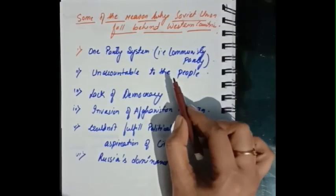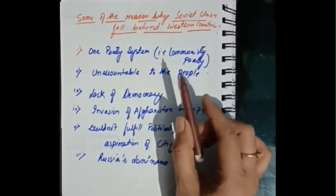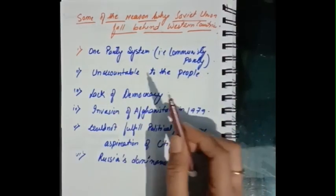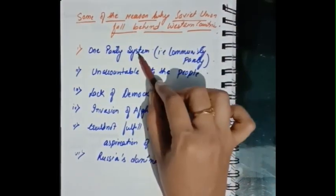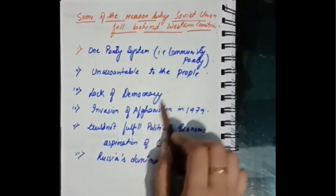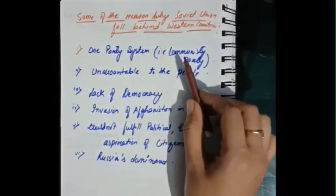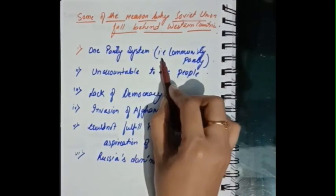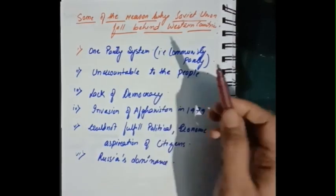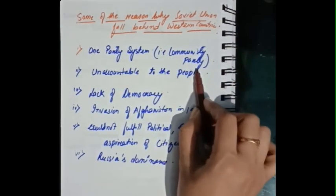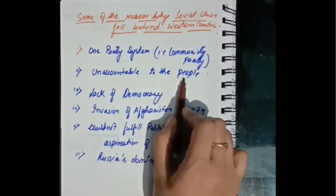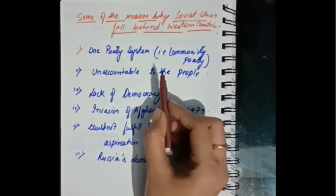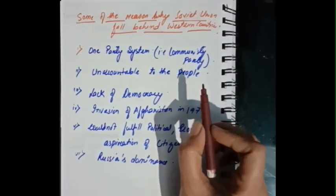Though the USSR had a well-developed economy and high-class infrastructure, there were some reasons why it fell behind Western countries. First, most institutions of the Soviet Union were under the one-party system — the Communist Party — which had tight control over all institutions and was unaccountable to the people. The government party refused to recognize the needs and desires of the people.